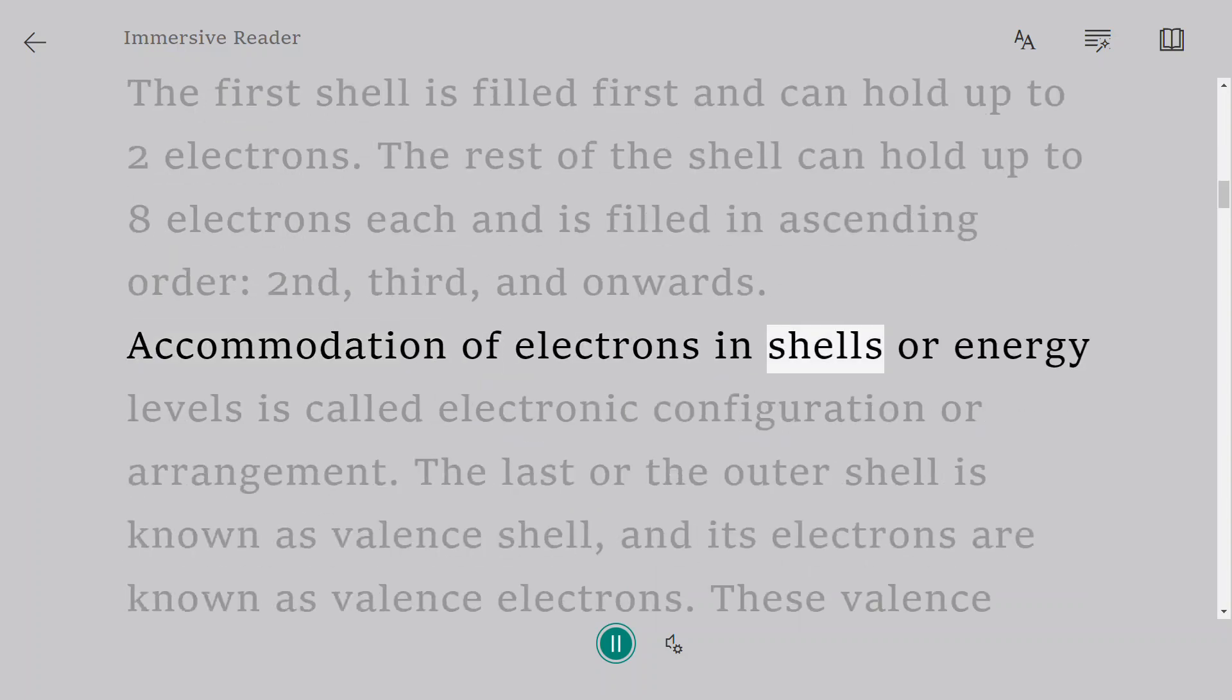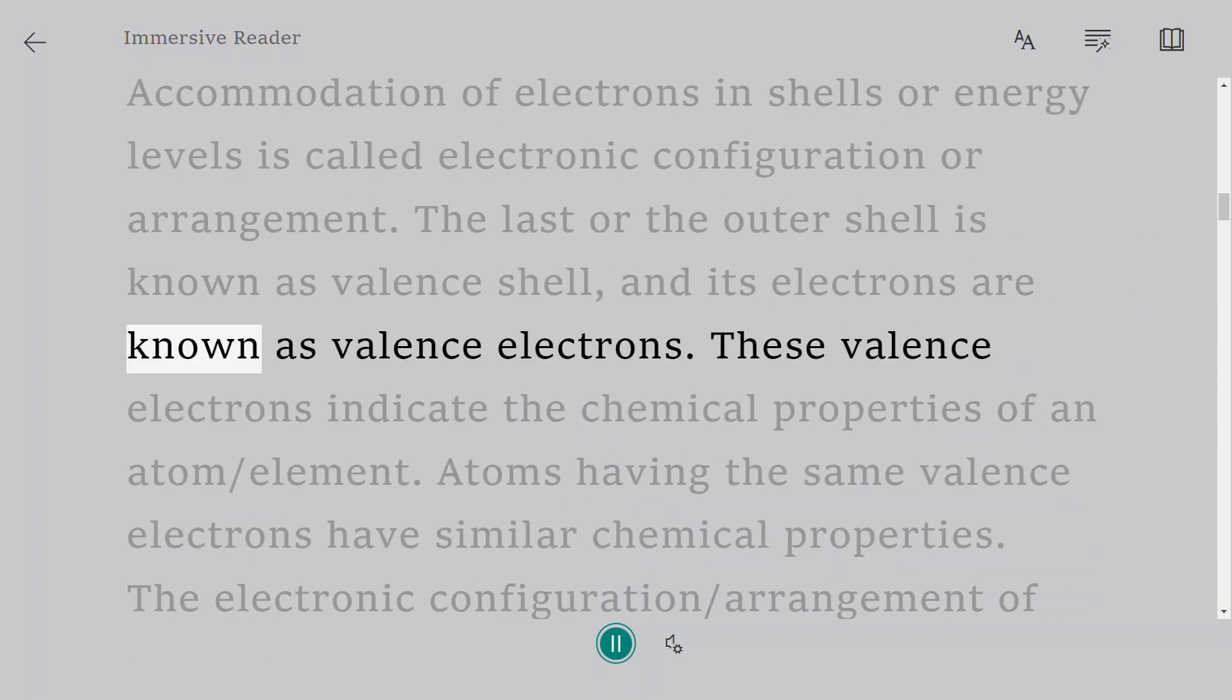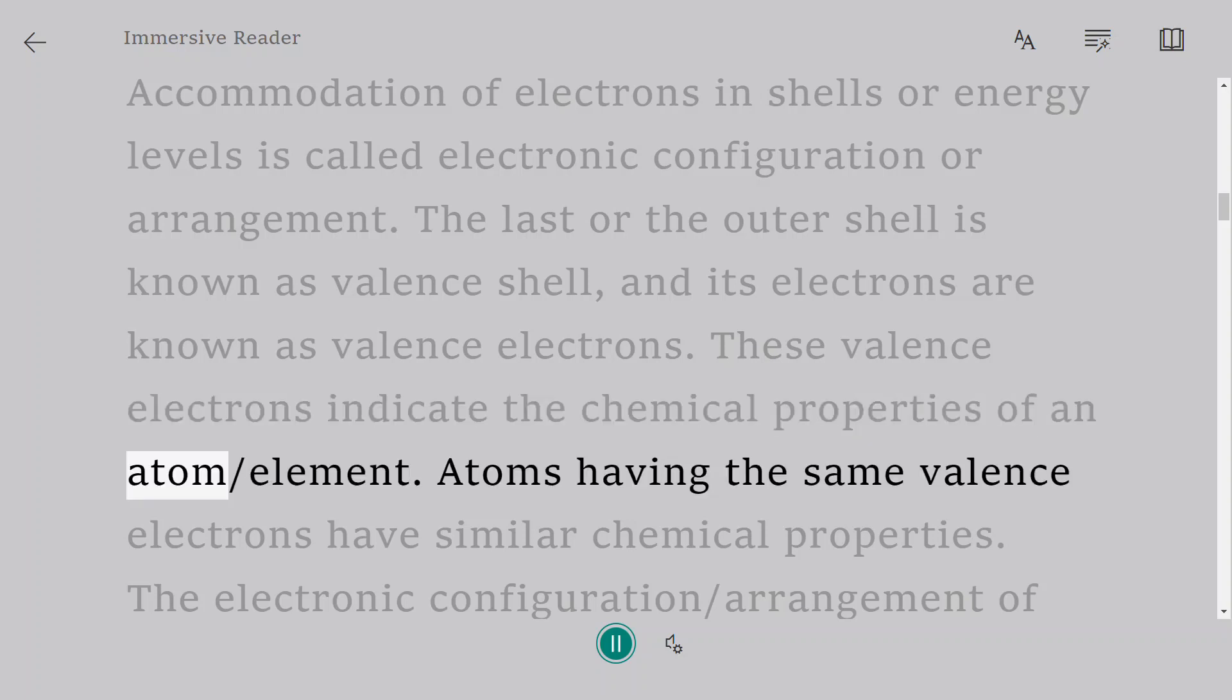Accommodation of electrons in shells or energy levels is called electronic configuration or arrangement. The last or the outer shell is known as valence shell, and its electrons are known as valence electrons. These valence electrons indicate the chemical properties of an atom/element.